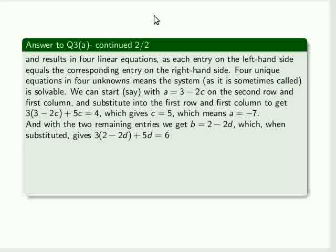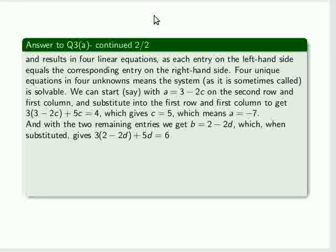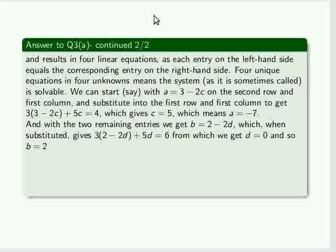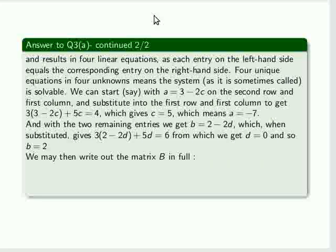And with the two remaining entries, we get b equal to 2 minus 2d, which when substituted gives 3 times (2 - 2d) + 5d equals 6, from which we get d equal to 0, in fact, a handy number, and so b equals 2.